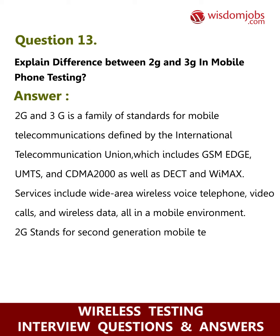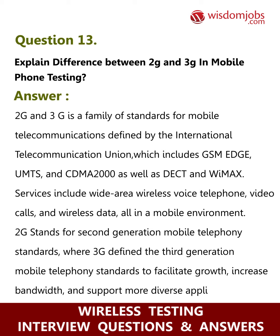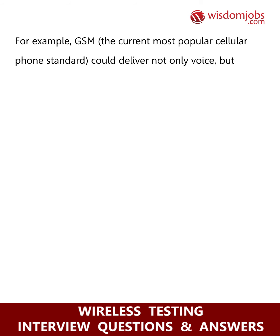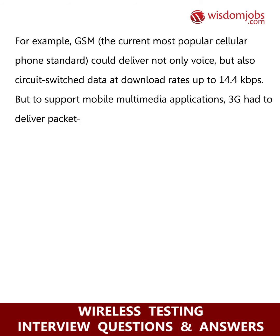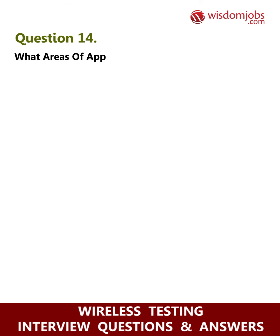2G stands for second generation mobile telephony standards, where 3G defines the third generation mobile telephony standards to facilitate growth, increase bandwidth, and support more diverse applications. For example, GSM, the current most popular cellular phone standard, could deliver not only voice but also circuit-switched data at download rates up to 14.4 kilobits per second. To support mobile multimedia applications, 3G had to deliver packet-switched data with better spectral efficiency at far greater bandwidth.